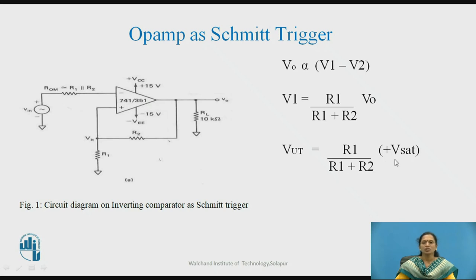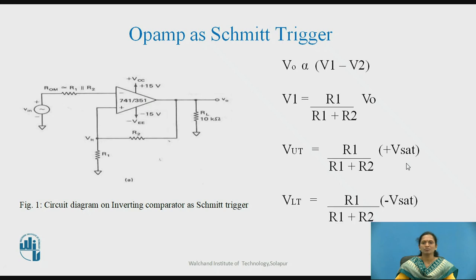As the OPAMP is configured with positive feedback, the output voltage will be +Vsat or −Vsat. Here, V0 is replaced by +Vsat for the upper threshold, and the lower threshold point VLT is obtained when the output voltage is −Vsat, giving VLT = R1/(R1 + R2) × (−Vsat).